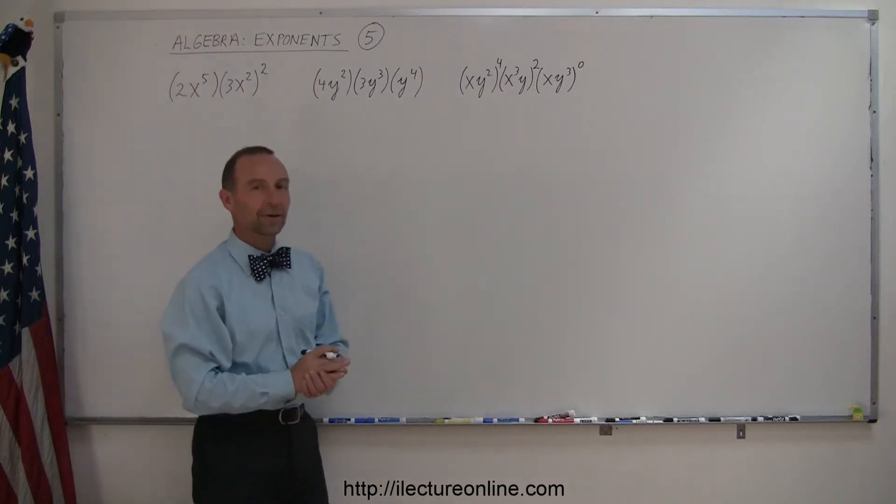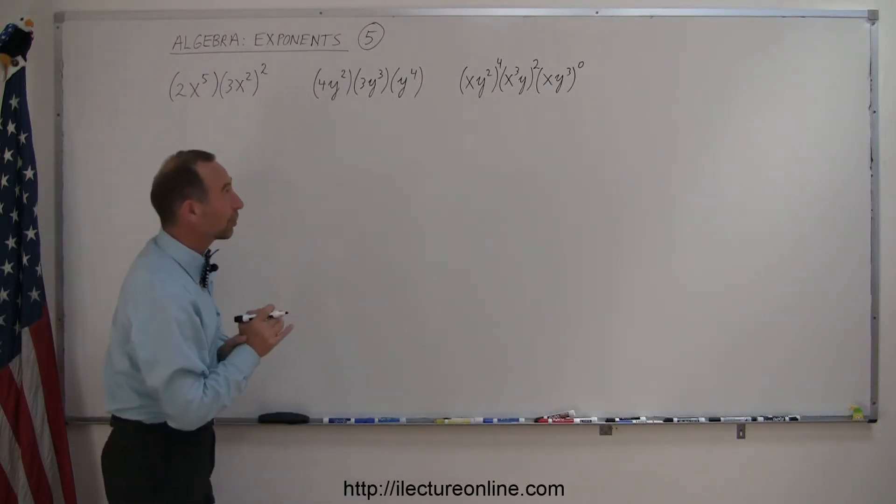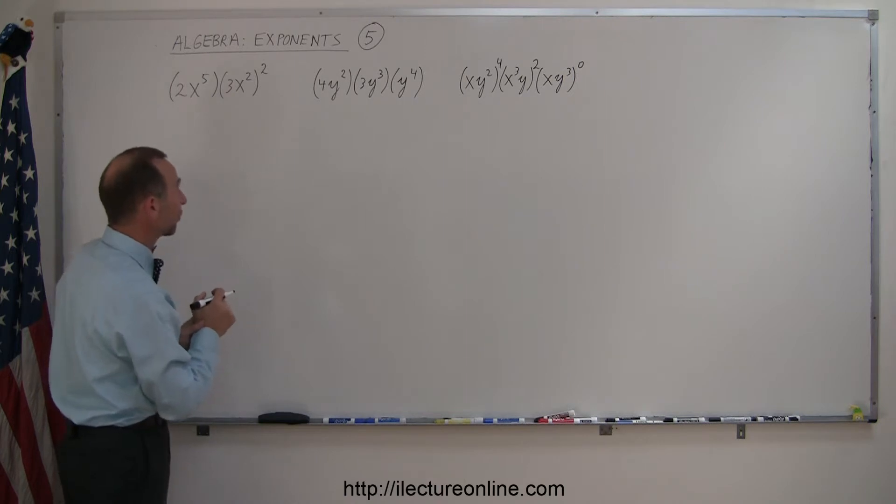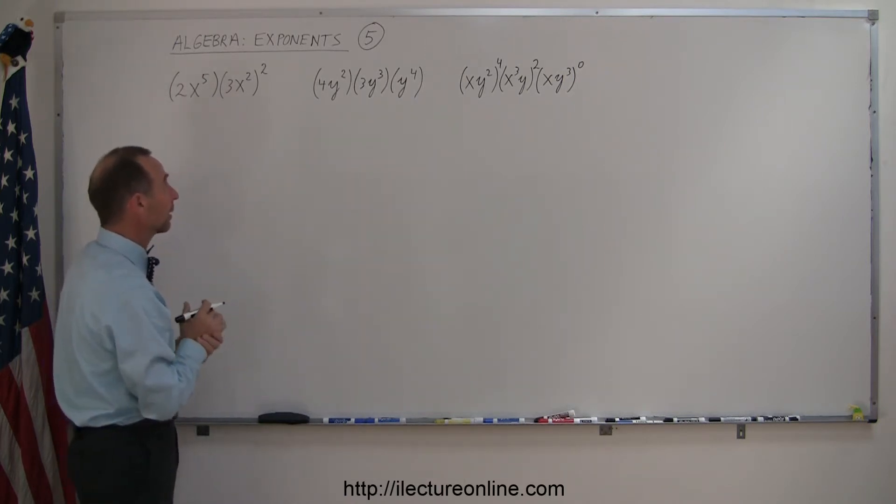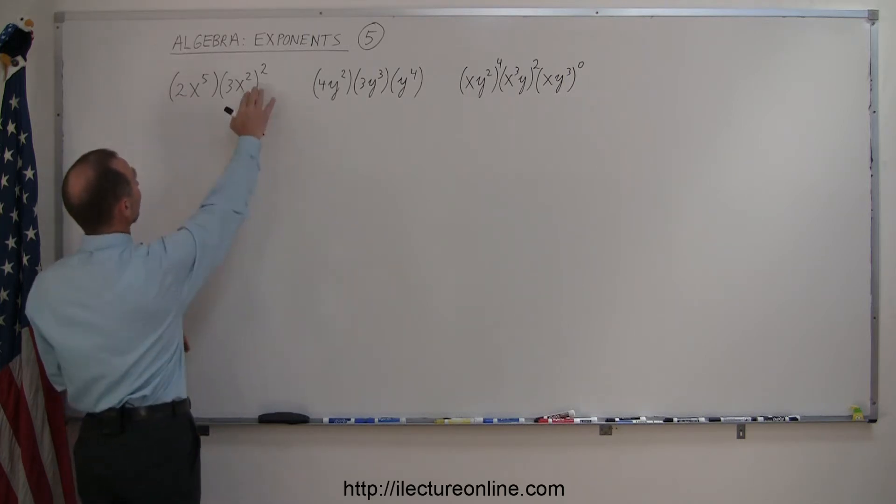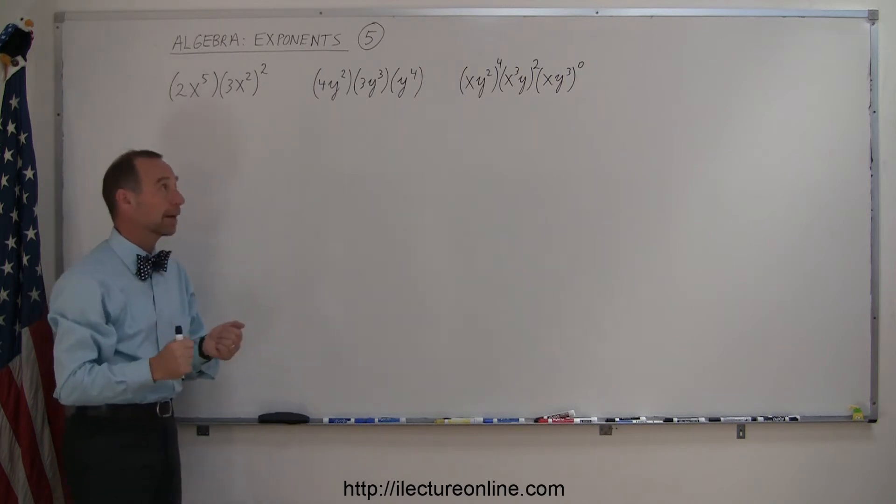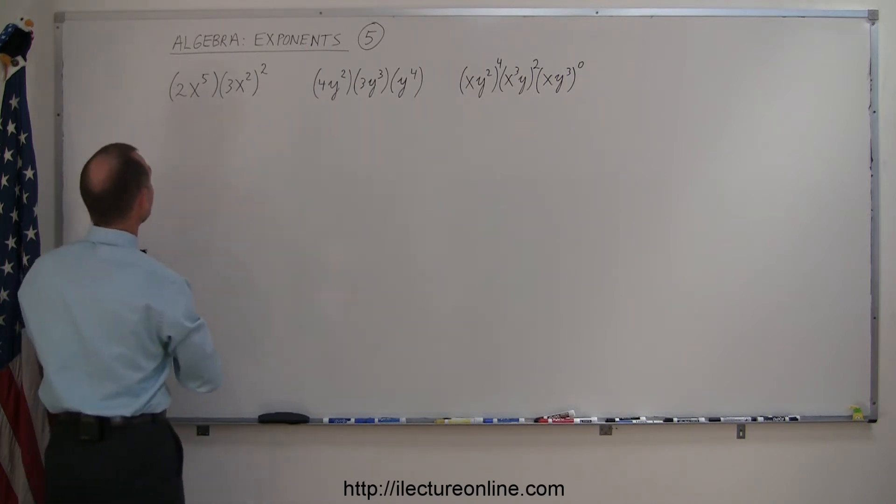And here's the set number five of how to work with exponents in algebra. Here's three good examples for us. And here we have to use a combination of multiplying terms together. They're also raised to an exponent and they themselves are raised to another exponent like in the case over here. So what do we do with that? All right, let's go ahead and take it away.